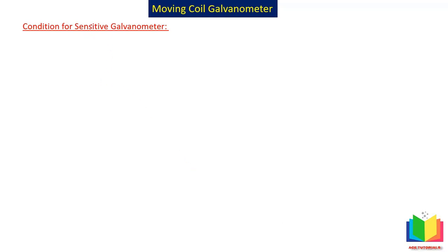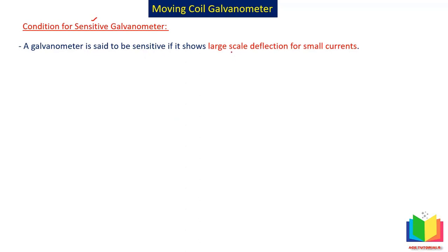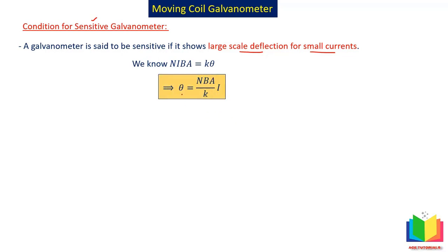The galvanometer we are using is used to find very small values of currents, so we need a sensitive device. A galvanometer is said to be sensitive if it shows large deflection for small currents — even for very small current it gives a measurable deflection that we can easily measure. Taking the equation N·I·B·A = K·theta, theta = (N·B·A / K) × I. For large deflection even for small currents, we need N·B·A / K to be large — so we increase NBA and decrease K. Increasing NBA or decreasing K will both make theta larger.